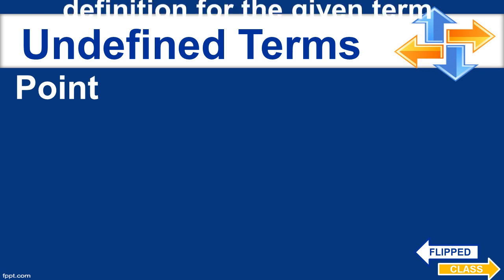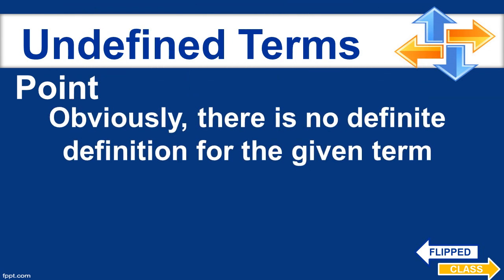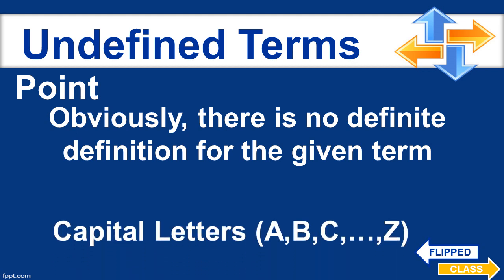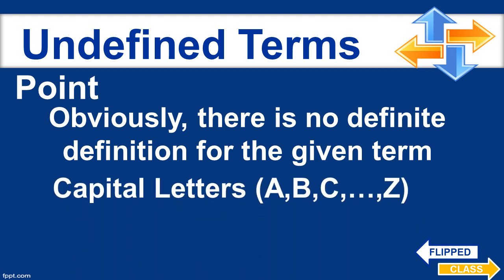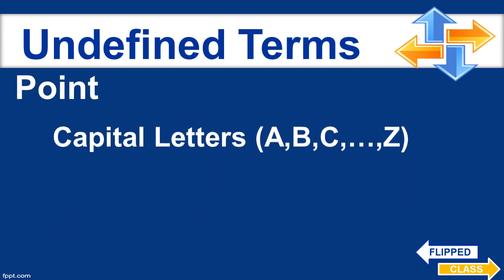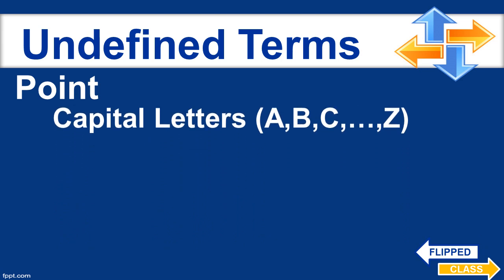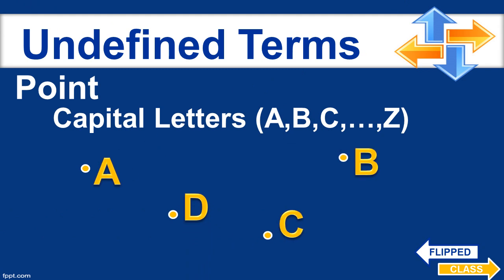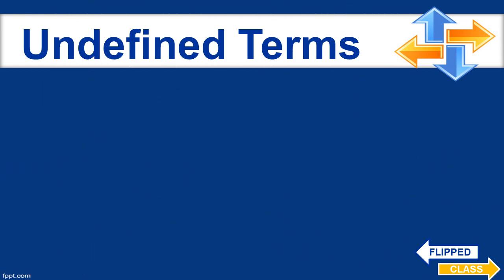So what is really a point? Well, obviously there is no definite definition for the given term. That makes point an undefined term — not an example, not a description. You can use capital letters A to Z to denote what a point is, just like these four points here. You could call them point A, point D, point C, or point B.